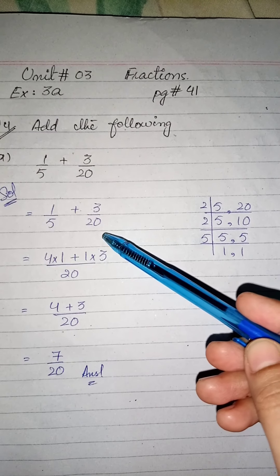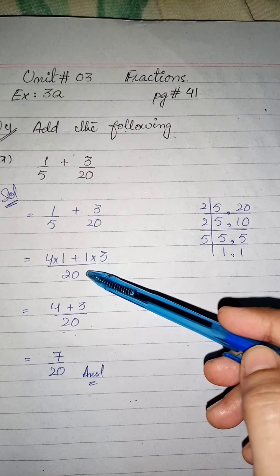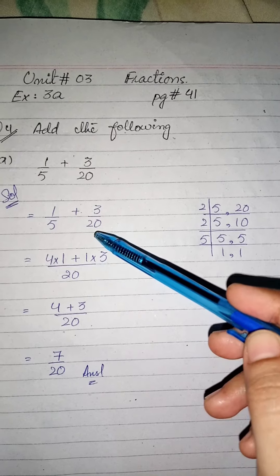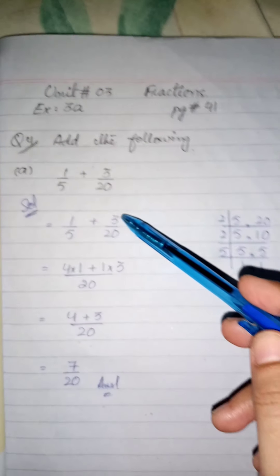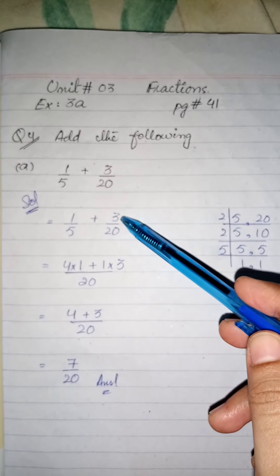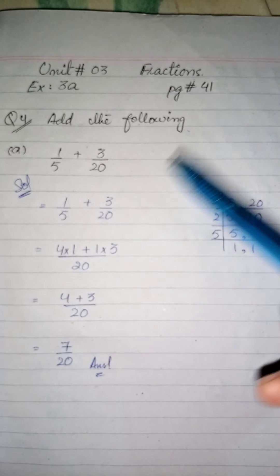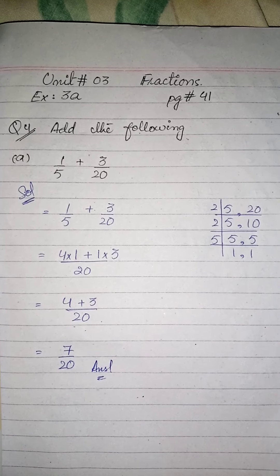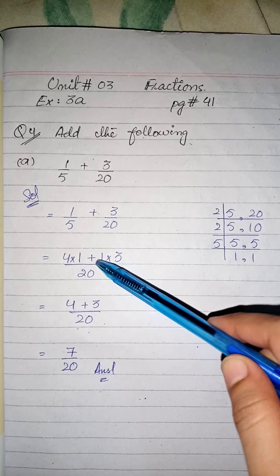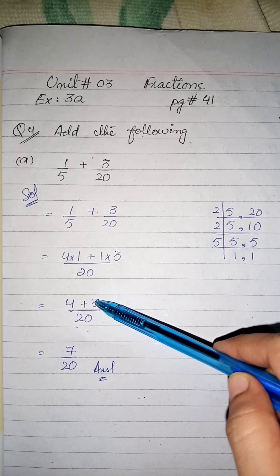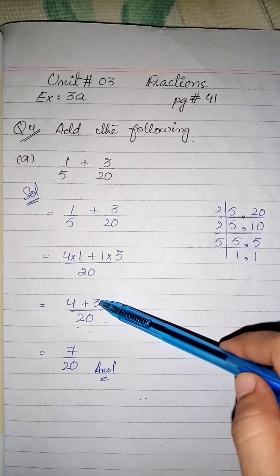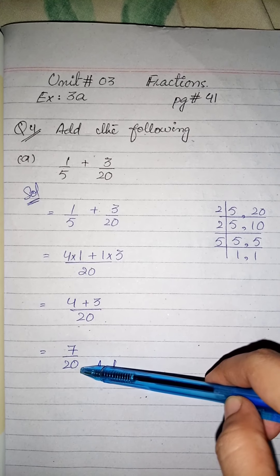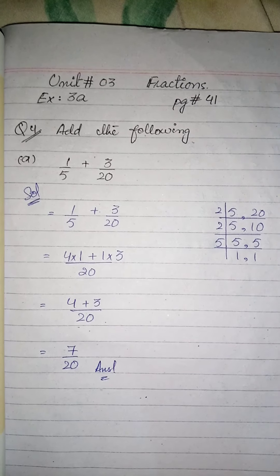Hum ne liya LCM five aur twenty ka. Pehle hum sab se chhote number se start karte hain. Two: 20 ÷ 2 = 10, 5 add it as is. Phir two: 10 ÷ 2 = 5, 5 add it as is. Phir five: 5 ÷ 5 = 1, 5 ÷ 5 = 1. Ab hum in sab ko multiply karenge: 2 × 2 = 4, aur 4 × 5 = 20. To hamare paas LCM kya aaya? Twenty.